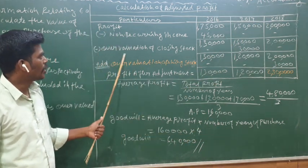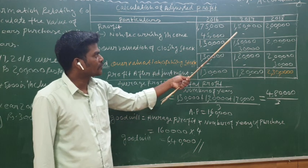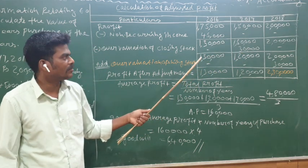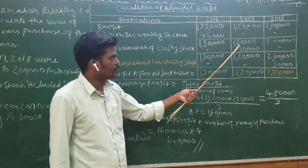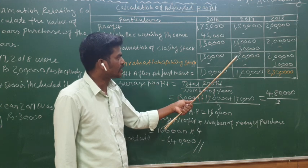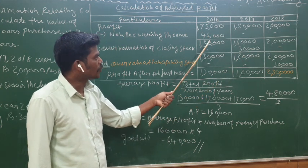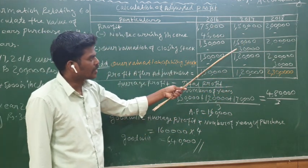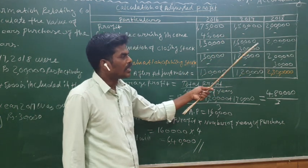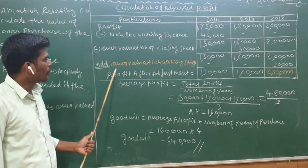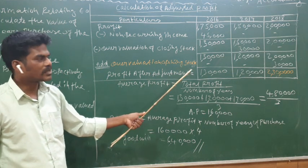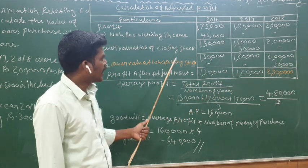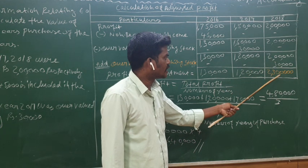Less overvaluation of closing stock: Rs. 30,000. So if we subtract Rs. 30,000 from Rs. 1,50,000, we get Rs. 1,20,000 as the adjusted profit for 2017. For 2018, since the overvalued closing stock of 2017 becomes the opening stock, we add back Rs. 30,000, giving Rs. 2,00,000 plus Rs. 30,000 equals Rs. 2,30,000.